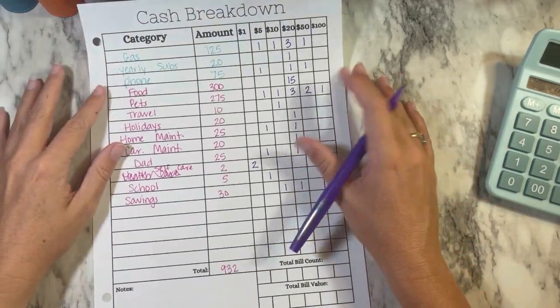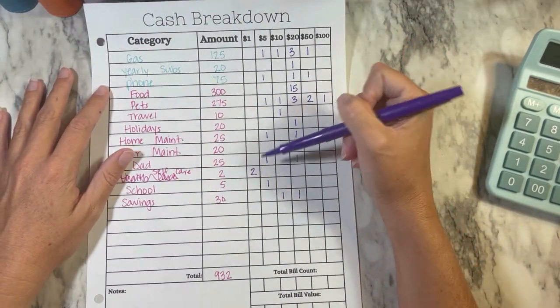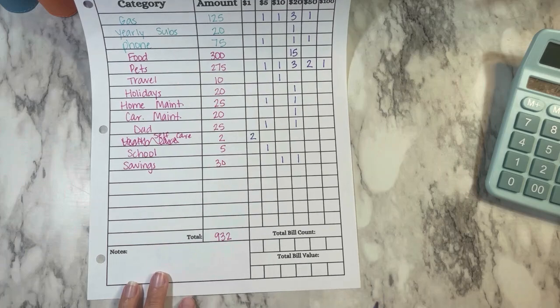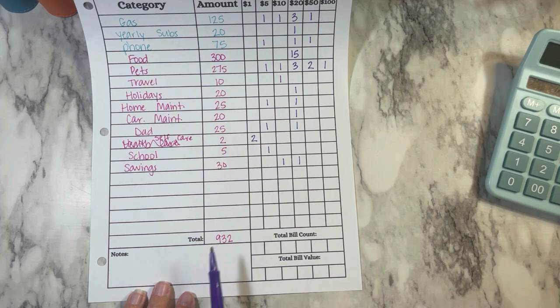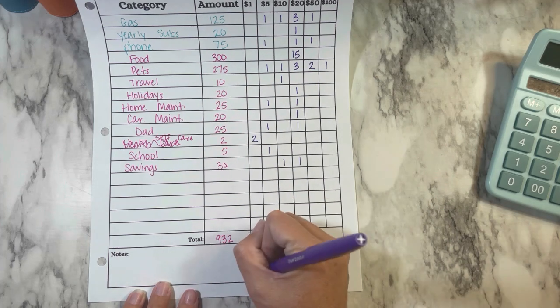Now I'm going to count up how much of each thing I have, and down here at the bottom, we'll put the total count for the bills and then the value, and it should equal the $932 that we have here.